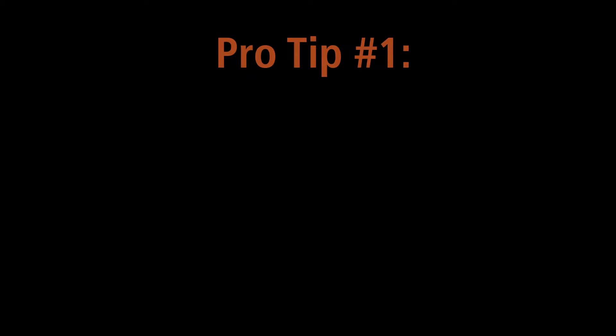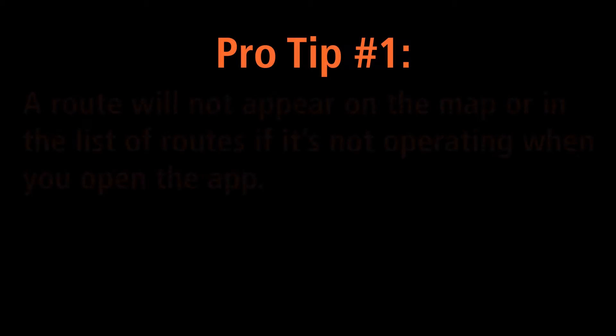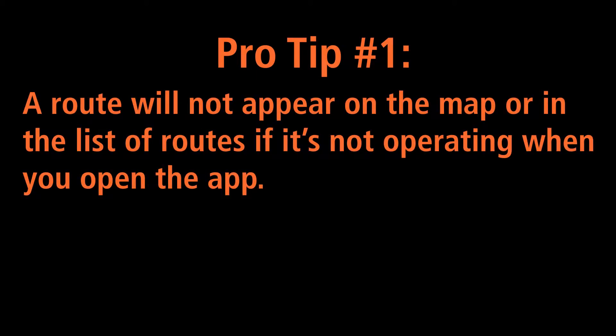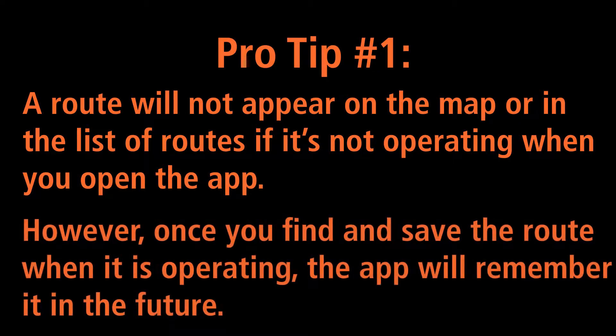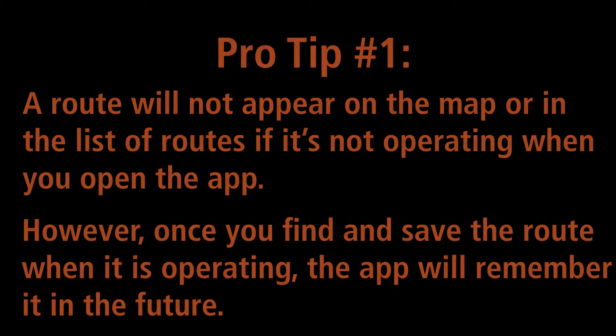Pro tip number one: a route will not appear on the map or in the list of routes if it is not currently operating at the time you open the app. However, once you find and save the route at a time when it is operating, the app will remember it in the future.